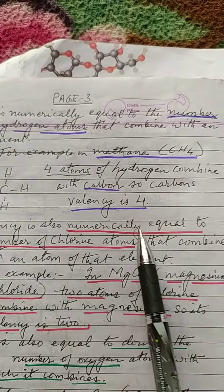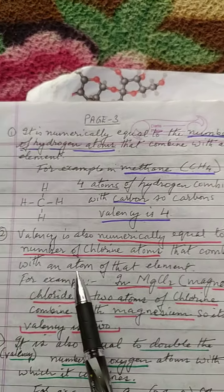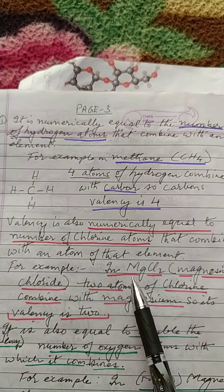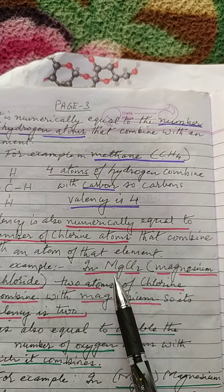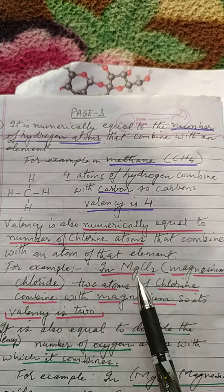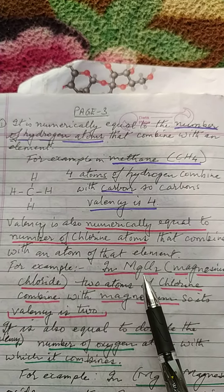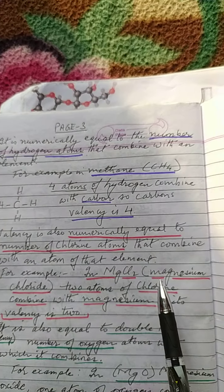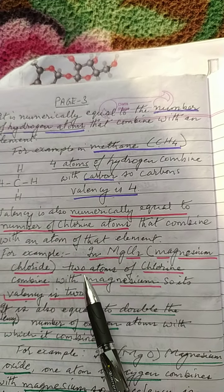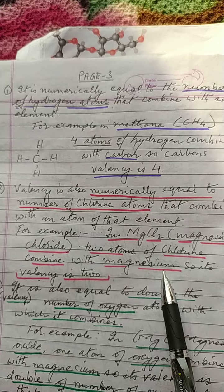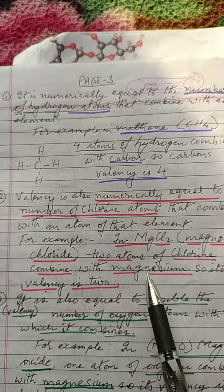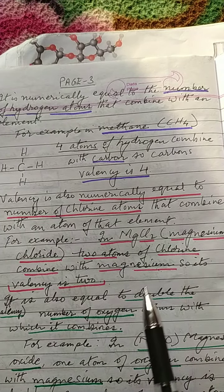Valency is also numerically equal to the number of chlorine atoms that combine with an atom of that element. Chlorine has a negative valency of one because it has seven electrons in its outermost shell. In magnesium chloride, two atoms of chlorine combine with magnesium, so the valency of magnesium is two — a positive valency of two.